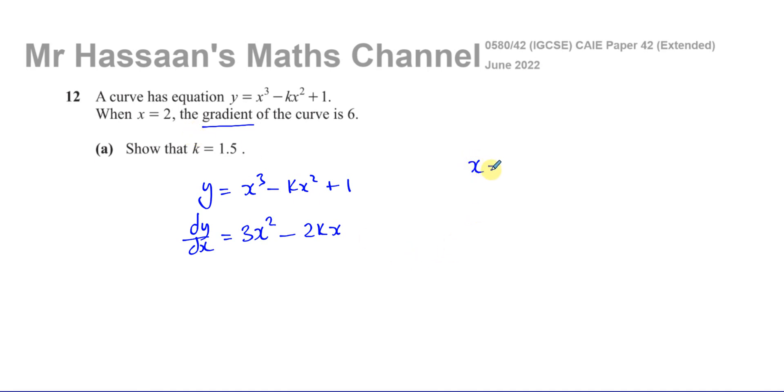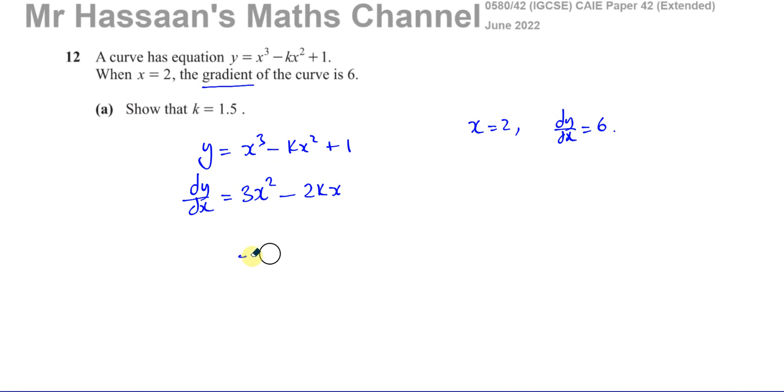So we know that when x equals 2, the gradient dy dx is equal to 6. So what we can do here is we can take our gradient function, 3x squared minus 2kx, and we can say that when x equals 2, dy dx equals 6. So I can say basically that 3 times 2 squared minus 2 times k times 2 has to equal 6.